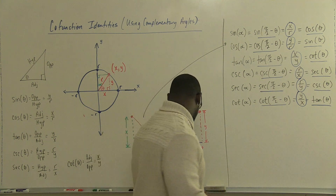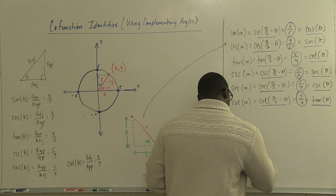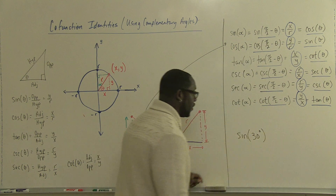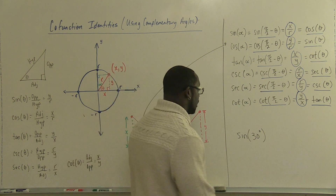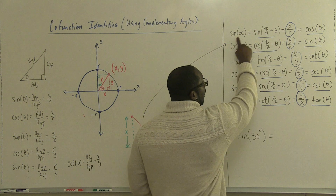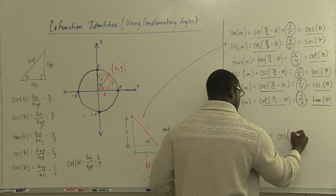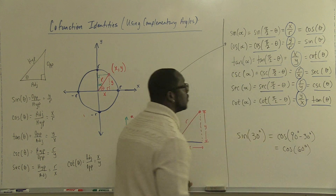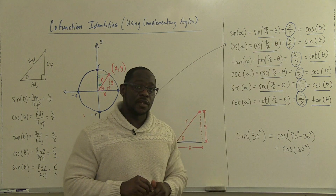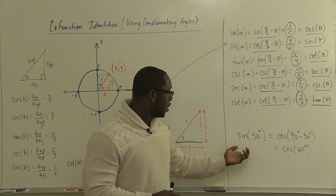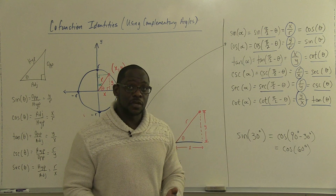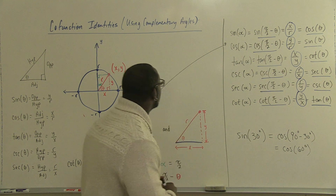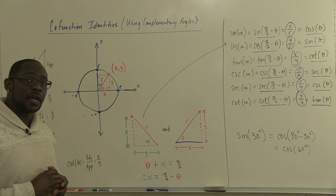This allows us to do things like: if I wanted to know what sine of 30 degrees is — using degrees to keep it simple — I know that since there's a relationship between sine and cosine, this would be the same as cosine of 90 degrees minus 30 degrees, which is cosine of 60 degrees. So the equivalent expression would be cosine of 60. This concludes the derivation of the co-function identities using complementary angles.